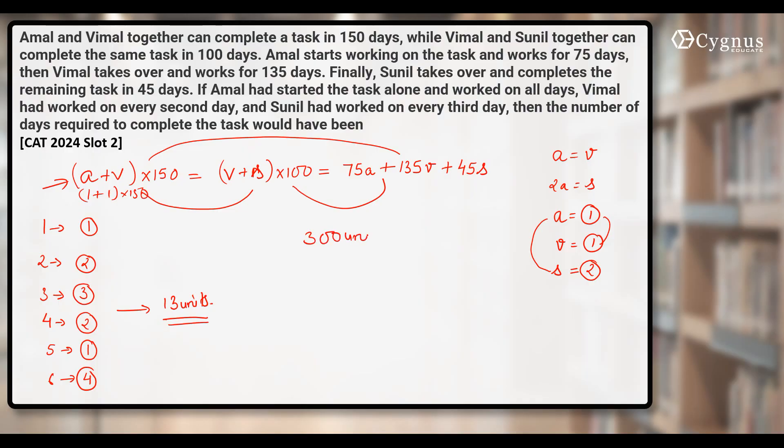That means they need to finish 300 units together working in this manner. In every six days, they'll be able to finish 13 units. So let's see this 13 is the value of one cycle. How many such cycles should be counted here? When you multiply 13 with 23, 13 with 23, you get 299 units.